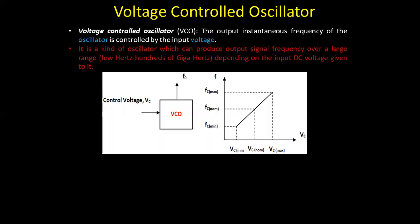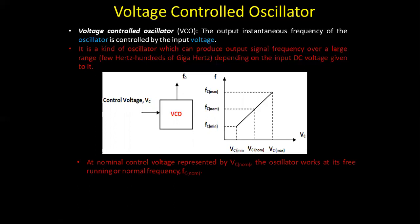If you see the block diagram, you can see that the control voltage is Vc, and from this control voltage a proportional output frequency has to be generated. In the graphical illustration we can also see that as the control voltage goes on increasing, the frequency proportionally increases as well. At the nominal control voltage the oscillator works at its free-running normal frequency.